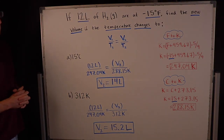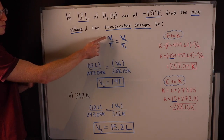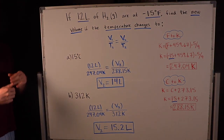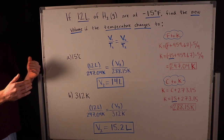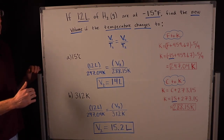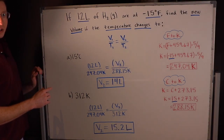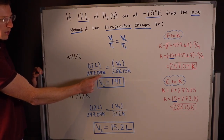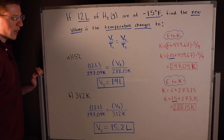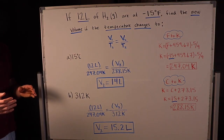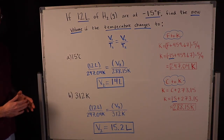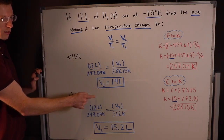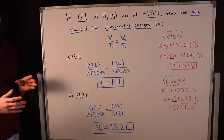Let's verify: with Charles's law, volume and temperature are directly related — when one goes up, the other goes up. Temperature went from 247.04 K to 288.15 K, so volume should increase. It did — from 12 liters to 14 liters. That checks out with Charles's law.